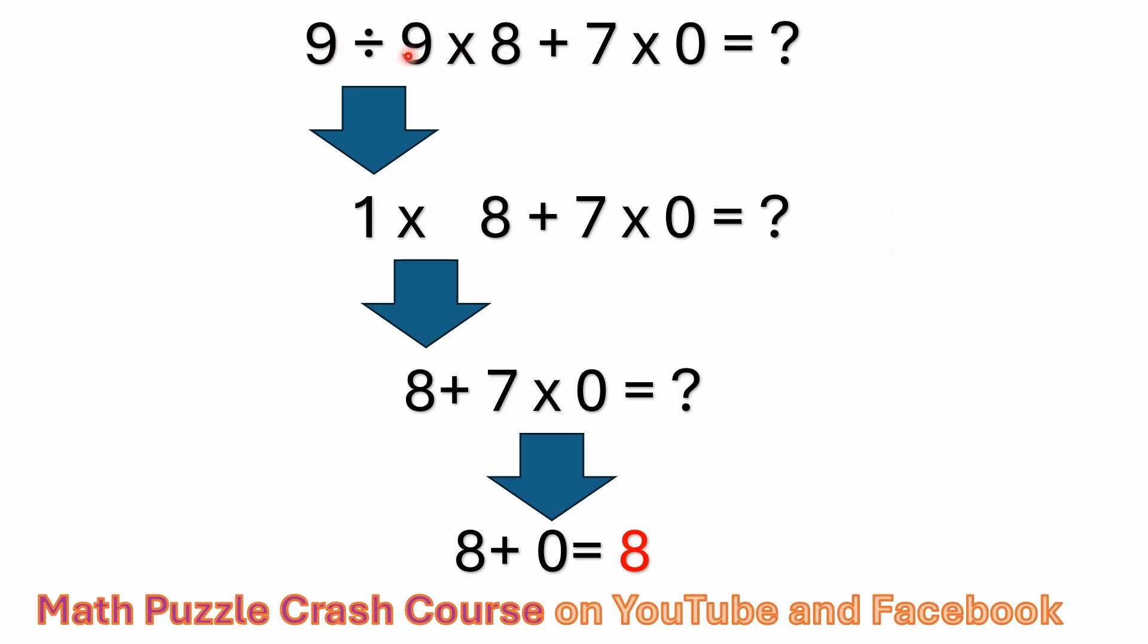So we're going to go back to this original problem. We have nine divided by nine times eight plus seven times zero. So remembering this order of operations convention that we just talked about, the very first thing we do, we don't have any parentheses. We don't have any exponents. We do have multiplication and division. Now remember multiplication and division have equal precedents and we solve them in the order we find them. We don't start with nine times eight because some people are saying, oh, but you got to start with multiplication. No, that's somebody who memorized a six letter acronym, but they don't know what it means. We do division and multiplication left to right. The first thing we run into going left to right is division. So we have nine divided by nine. What is nine divided by nine? Nine divided by nine is one.